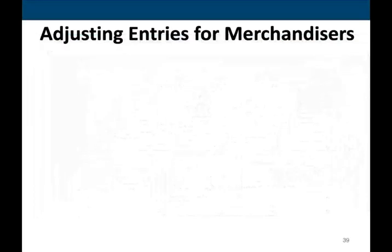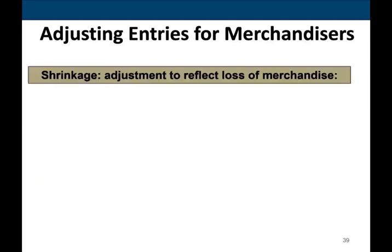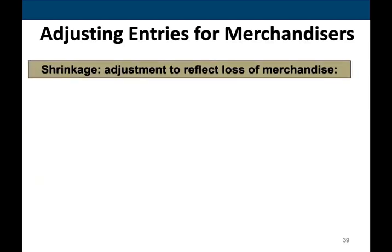So, adjusting entries for merchandisers. Again, all the previous adjustments still apply, except now we have a new account called inventory. What happens to inventory is this: sometimes we're going to have something called shrinkage. Shrinkage is a fancy word for loss of inventory — theft, obsolescence — basically the inventory is either no good or it went missing.